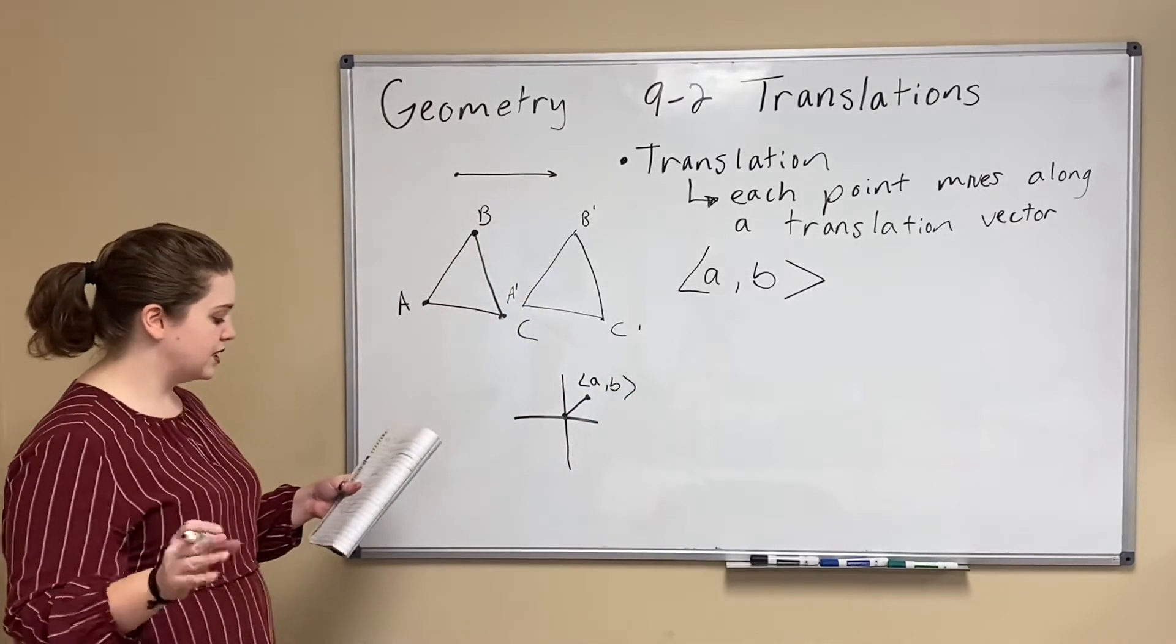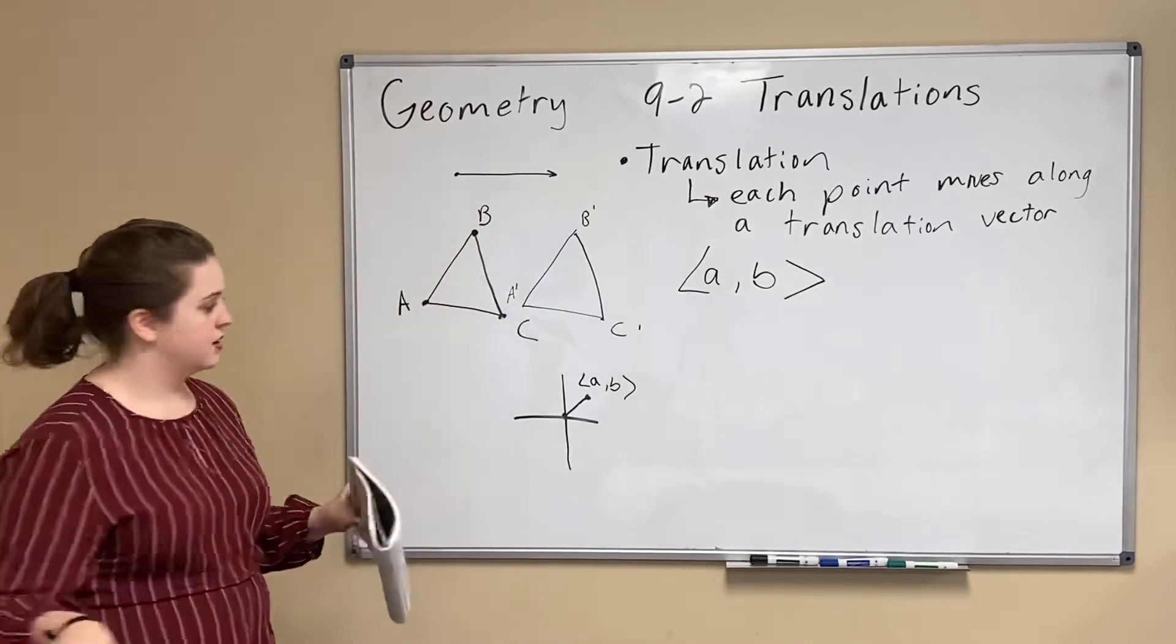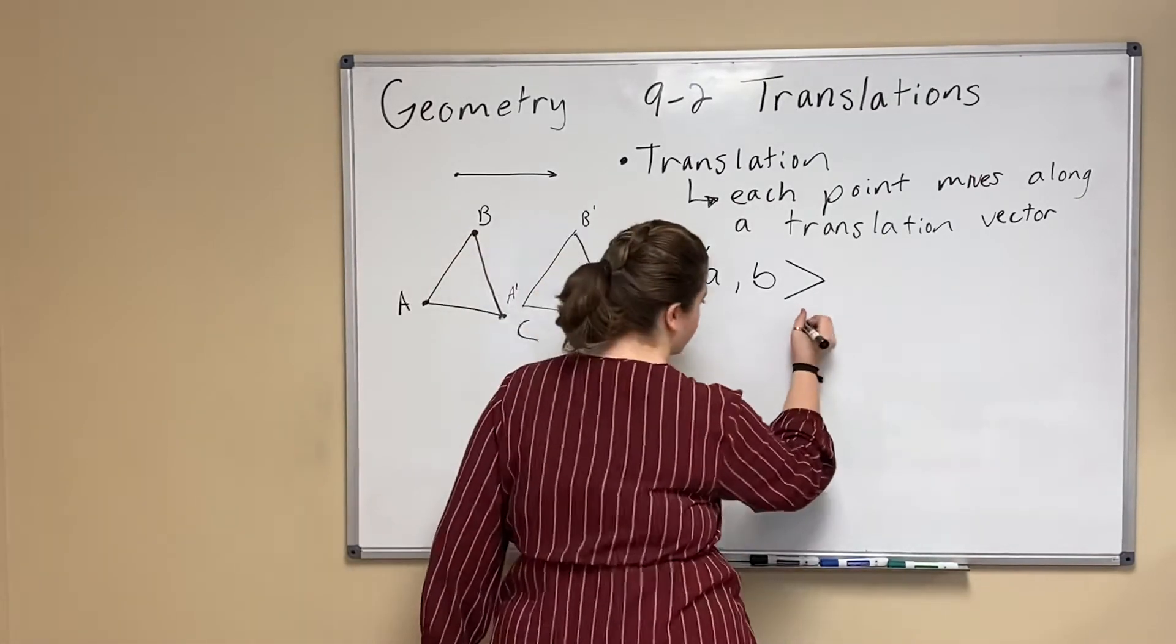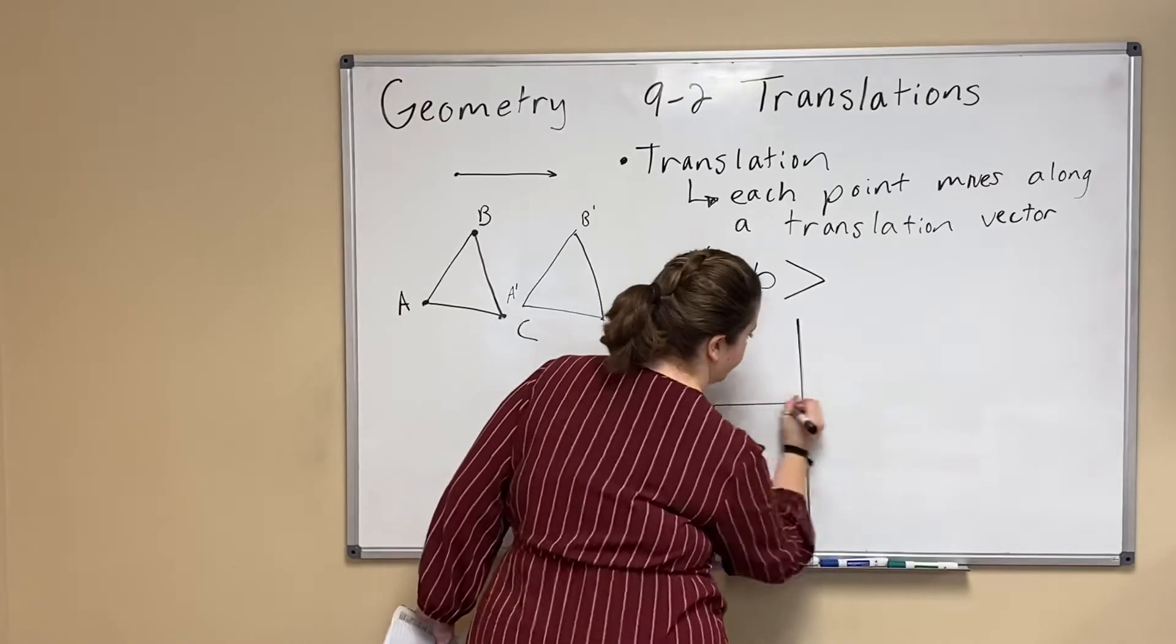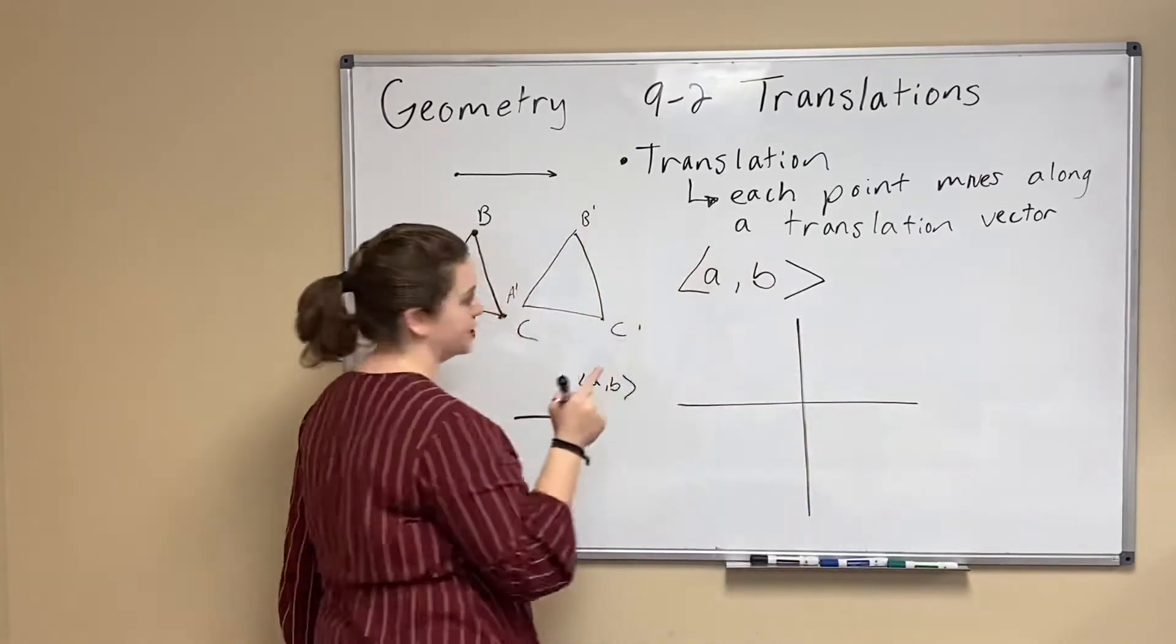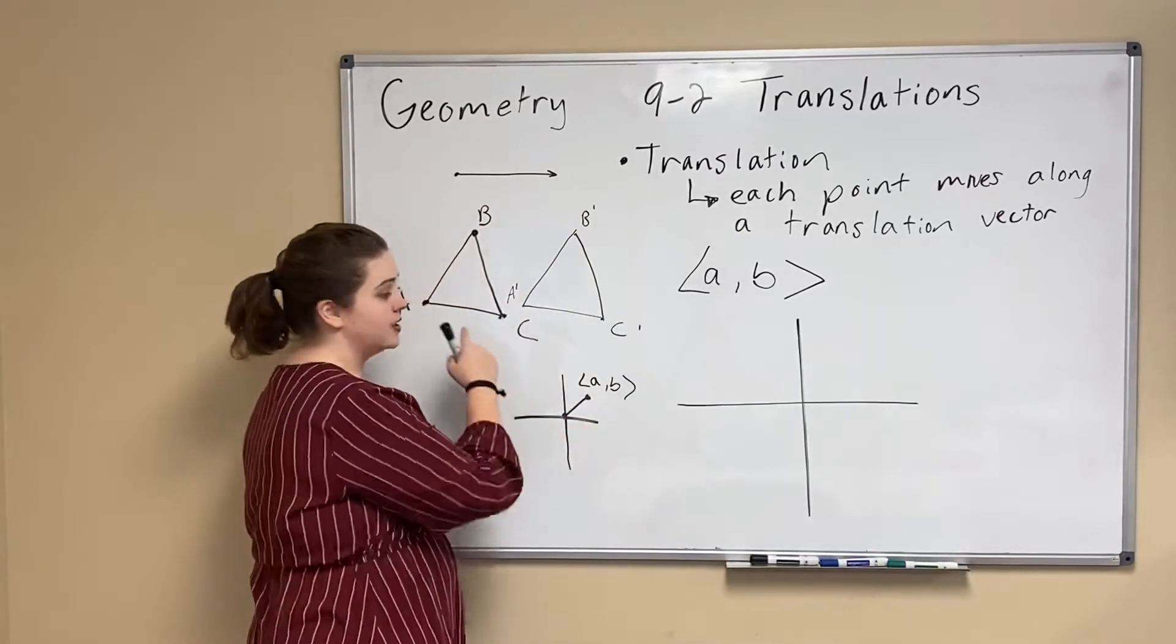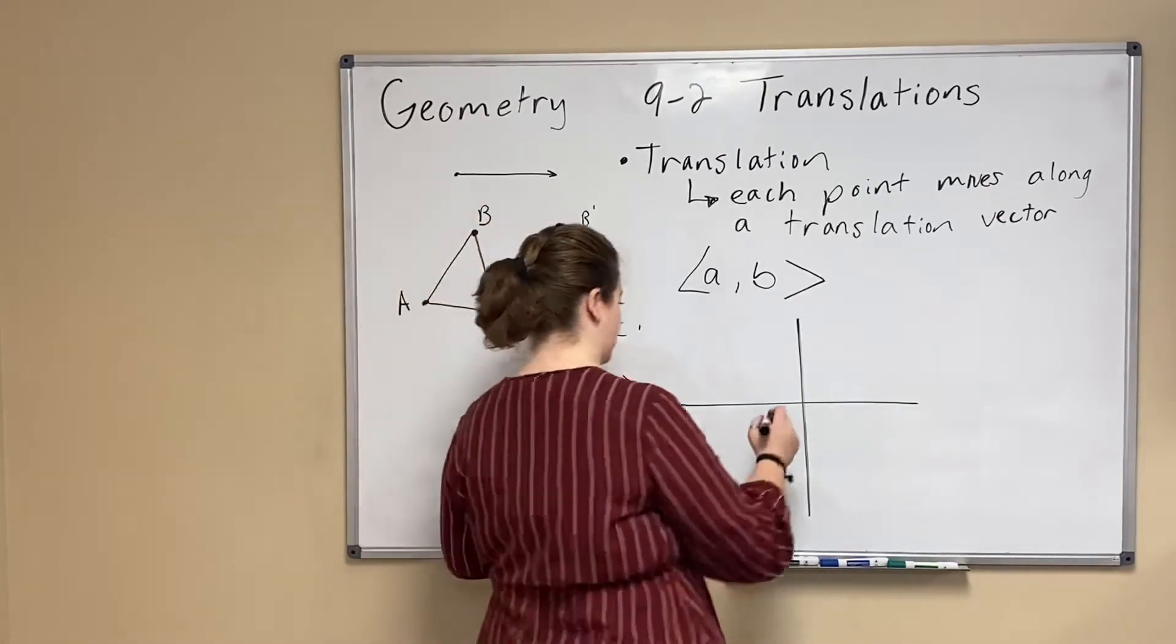We're going to do basically the same thing as we did here on a coordinate plane, but they're going to give us our component form of our vector and we're going to have to add that to our other points and I'll show you how we do that.